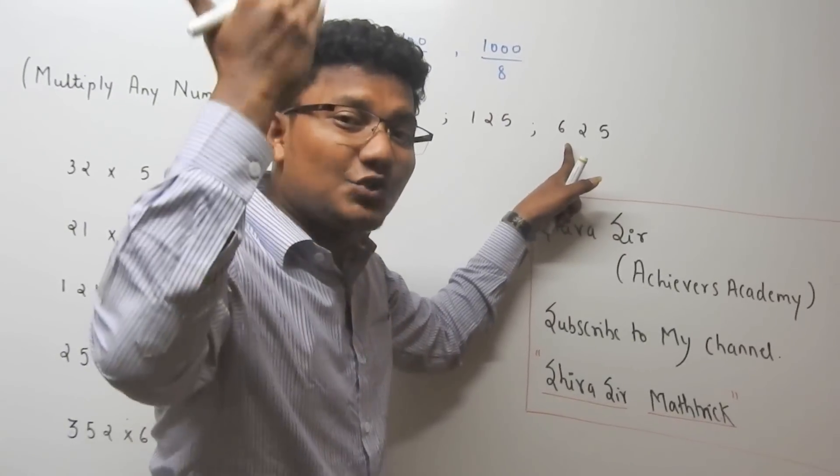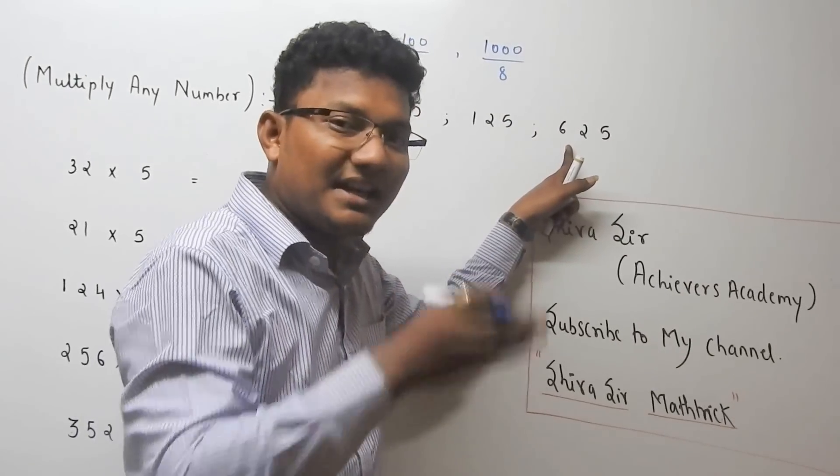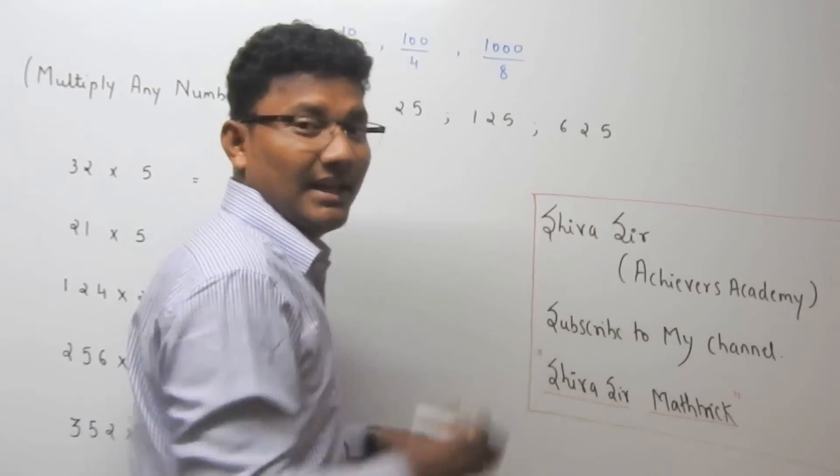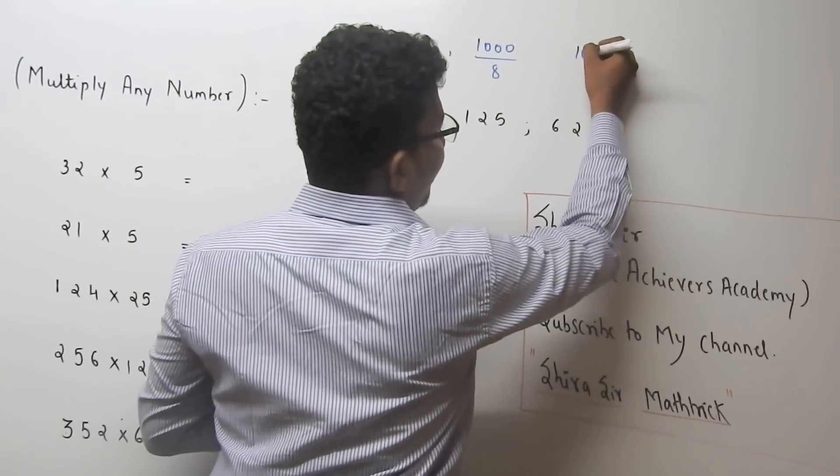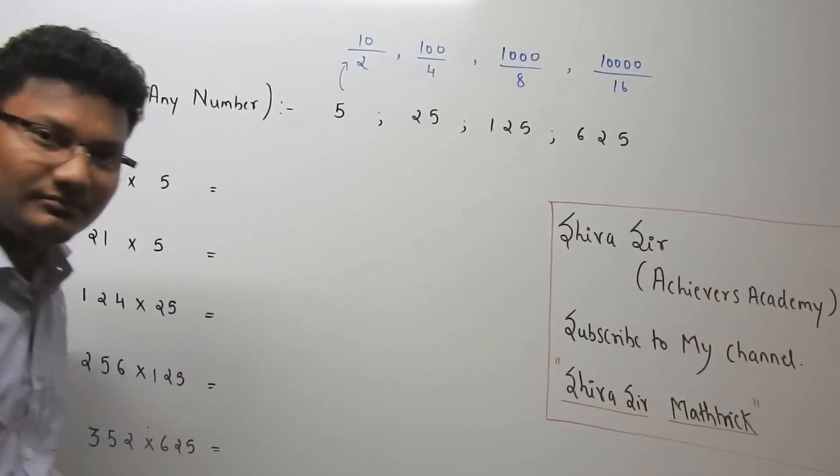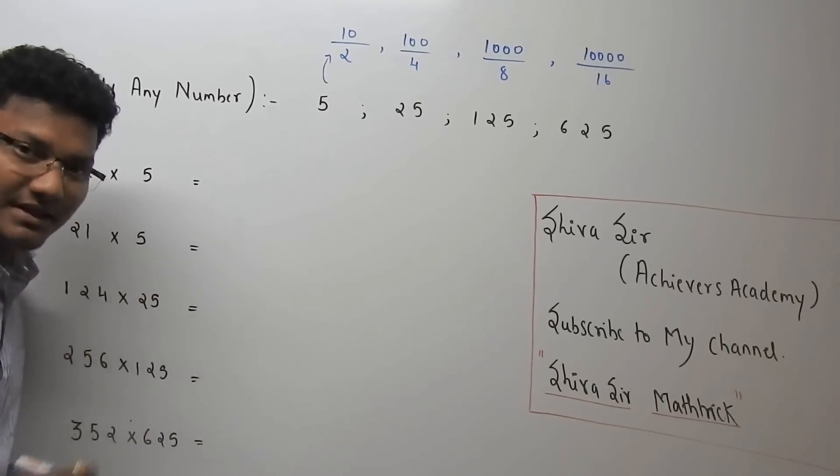And 625 is 5 raised to 4, so it can be written as 10 by 2 into 10 by 2 into 10 by 2 into 10 by 2. That means 10000 by 16. You understood the concept?